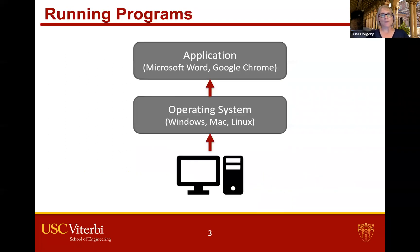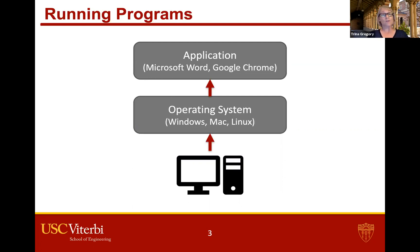Now let's talk about running programs. On our computer, which is our hardware, we have software called an operating system. The operating system allows other software to actually talk to the lower-end components of the hardware. So when we install something like Microsoft Word, we install a version that is made for your operating system. And the same is true for any web browsers and any other software applications — they are written generally for your specific operating system.